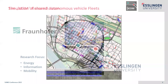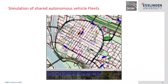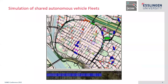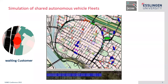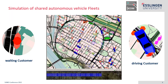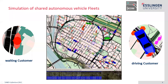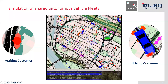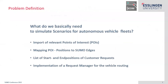Now I'll come back to our project. What we are doing here is we have a fleet of autonomous vehicles driving around, and you see these red dots which represent waiting customers in front of certain points of interest — for example apartment buildings, office buildings, or restaurants — and they want to get picked up and driven to other points of interest. We have green dots for theaters, blue dots for restaurants, and pink areas for office buildings. The question is: what do we basically need to perform such simulations?